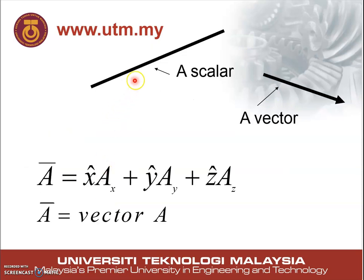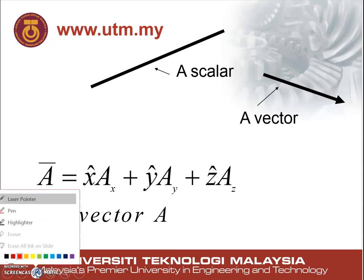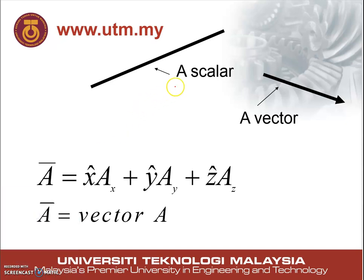This is a simple graphical representation of how a scalar and a vector look like. For example, let's say this represents a distance. So we can say it's five kilometers — that's all. A magnitude of value.